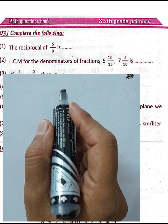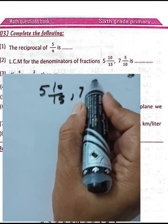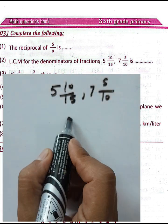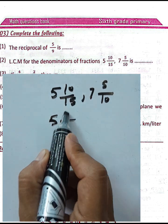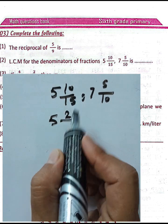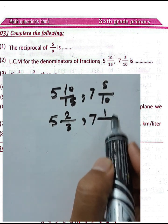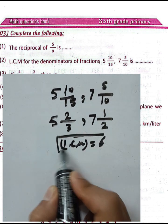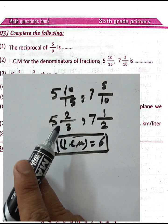Find the least common multiple of the denominators of the fractions 5 and 10 over 15, and 7 and 5 over 10. First, write both fractions in simplest form: 10/15 simplifies to 2/3, and 5/10 simplifies to 1/2. Then find the LCM of 2 and 3, which is 6.